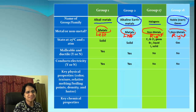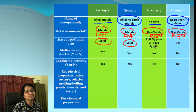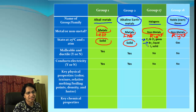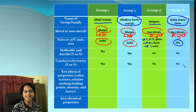Let's move on to the next property: state at room temperature. Metals are solid, so group 1 and group 2 will be solid. In the case of group 17, we have three different things — fluorine and chlorine are gases, bromine is liquid at room temperature, and iodine is surprisingly solid at room temperature. The last group, noble or inert gases — no wonder they are in the gas state.